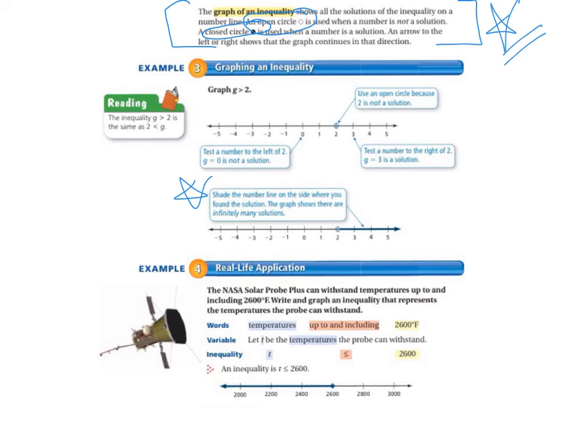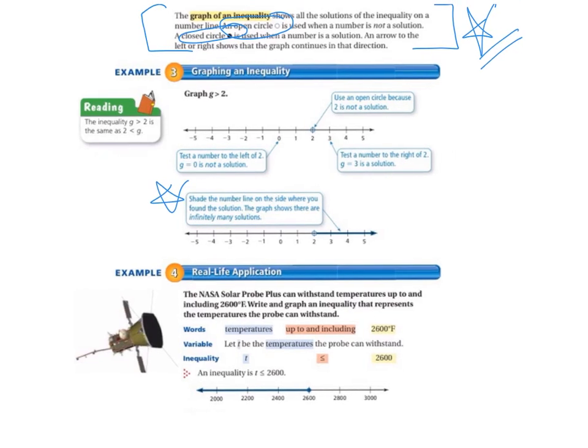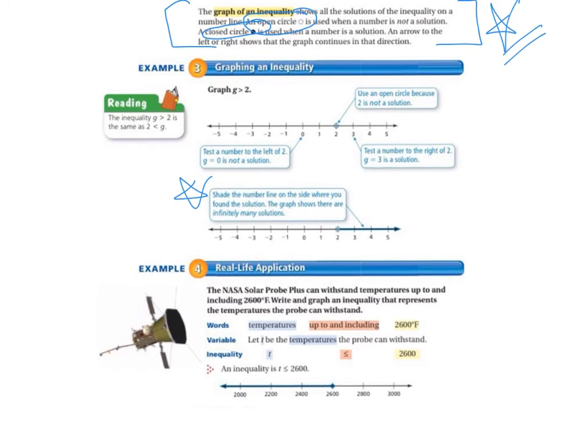So our inequality is T less than or equal to 2,600. And when we graph that, it's everything to the left of 2,600 and the closed circle on 2,600.